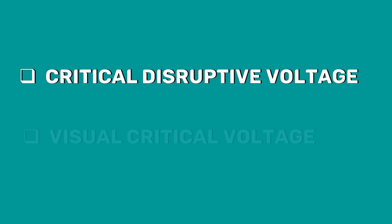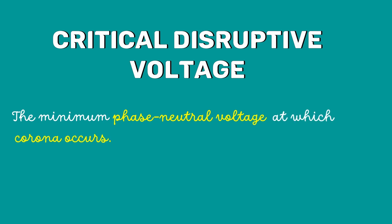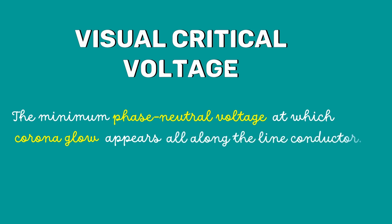There are two important terms related to corona. Critical disruptive voltage and visual critical voltage. Critical disruptive voltage is the minimum phase neutral voltage at which corona occurs and the visual critical voltage is the minimum phase neutral voltage at which the corona glow appears all along the line conductor.